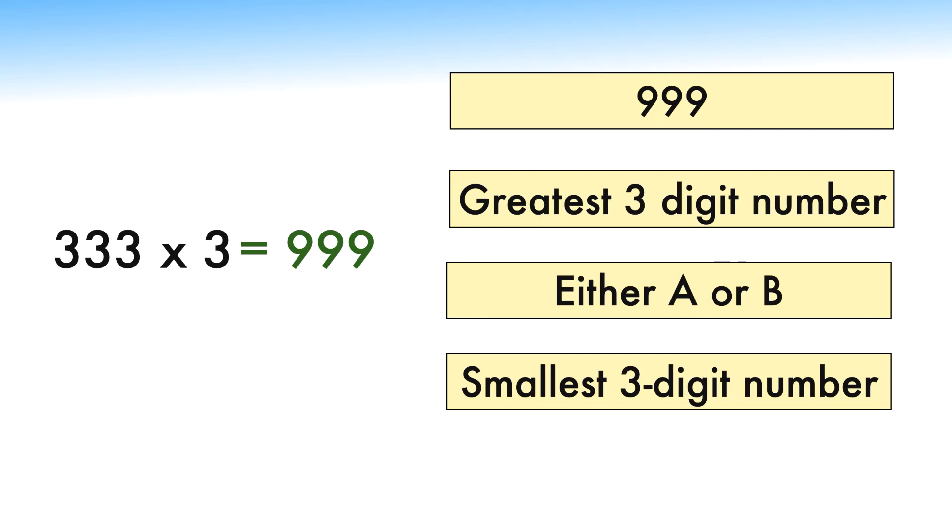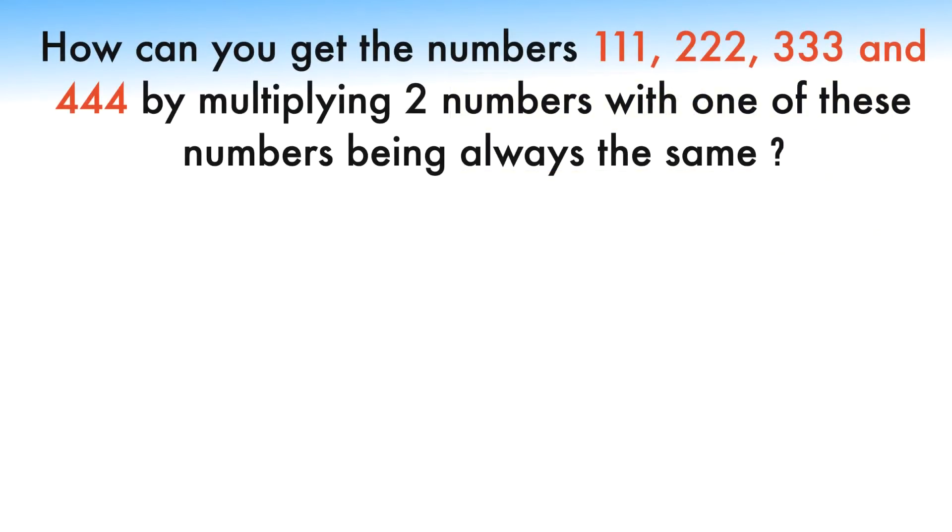So, there is a similar question which states: how can you get the numbers 111, 222, 333, and 444 by multiplying two numbers with one of these numbers being always the same? You can pause and try before checking the solution. Let me explain the solution now.